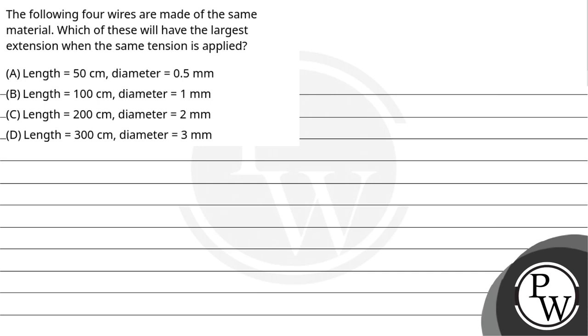Now let's read the question. The following four wires are made of the same material. Which of these will have the largest extension when the same tension is applied? Option A: length 50 centimeter, diameter 0.5 mm. Option B: length 100 centimeter, diameter 1 millimeter. Option C: length 200 centimeter, diameter 2 millimeter. Option D: length 300 centimeter and diameter 3 millimeter.